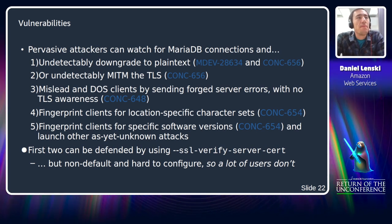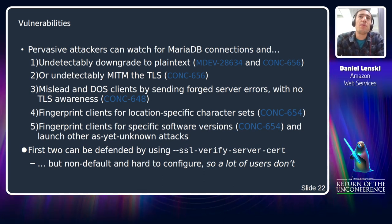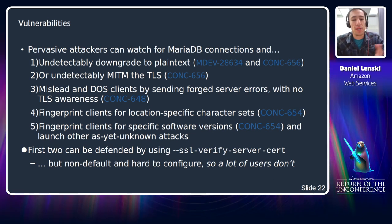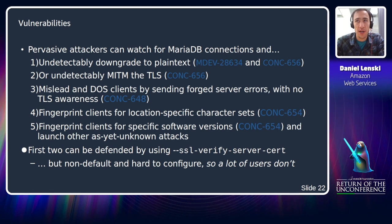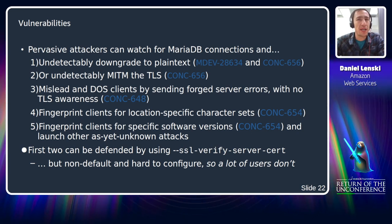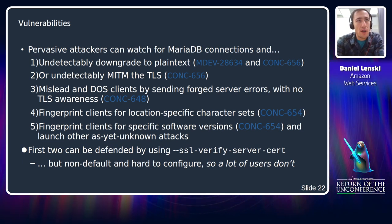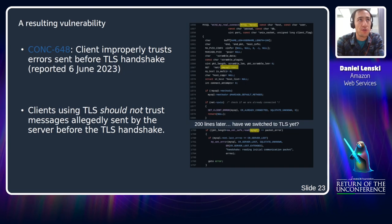A number of vulnerabilities result from this. Using these vulnerabilities, pervasive attackers who can intercept MariaDB connections can undetectably downgrade connections to plain text, or undetectably perform a MITM attack with two TLS handshakes. They can mislead clients and launch denial-of-service attacks by sending forged errors with no TLS awareness needed. They can fingerprint clients for location-specific information like character sets, and fingerprint for specific software versions. The first two can be defended by verifying server certificates in the client — but unfortunately, that is not on by default and is surprisingly hard to configure.